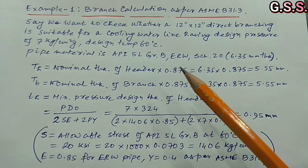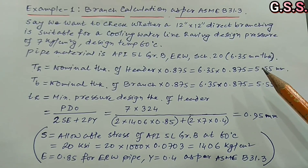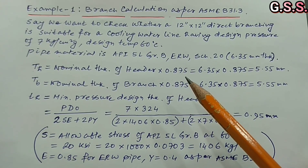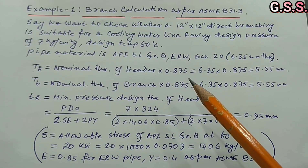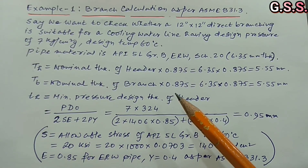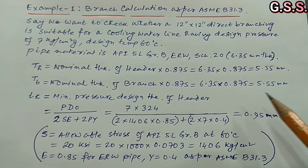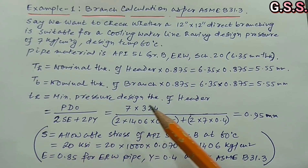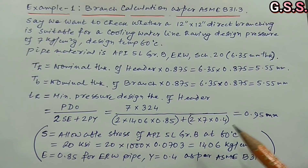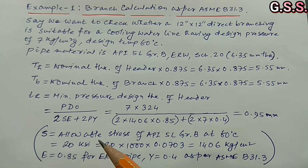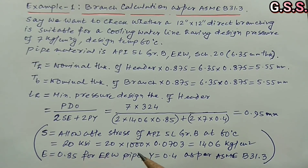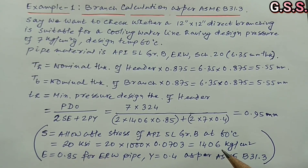Pipe material is API 5L Grade B ERW Schedule 20, that means 6.35 mm thick. Capital TH equals nominal thickness of header × 0.875 (considering 12.5% negative manufacturing tolerance) = 5.55 mm. Capital TB = nominal thickness of branch × 0.875 = 5.55 mm. Small tH = minimum pressure design thickness of header = P·D₀ / (2·S·E + 2·P·Y) = 0.95 mm. S = allowable stress of API 5L Grade B at 60°C = 20 KSI = 20 × 1000 × 0.0703 = 1406 kg/cm².